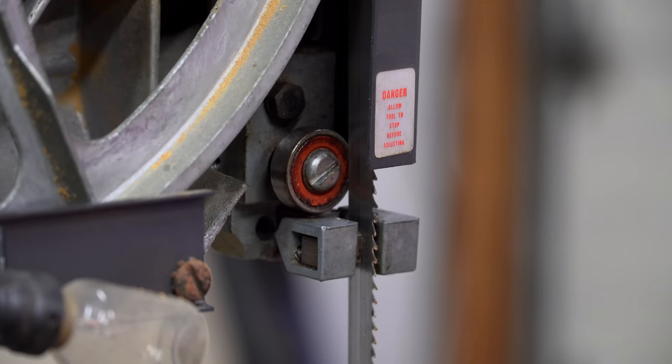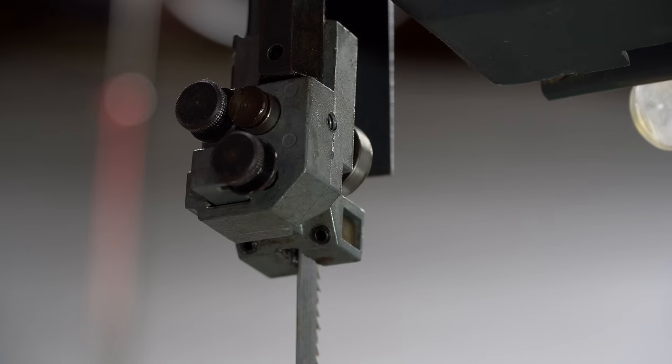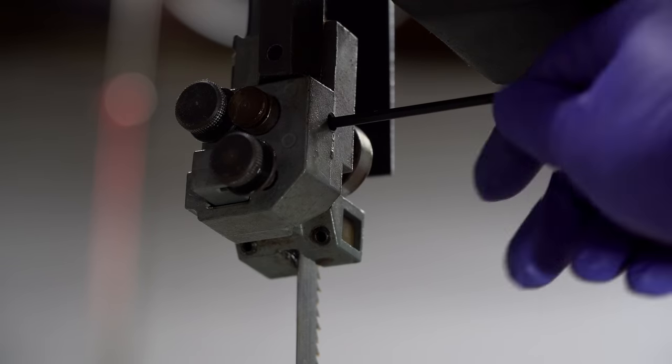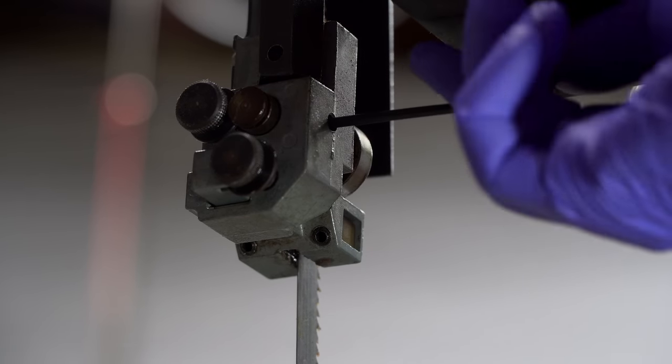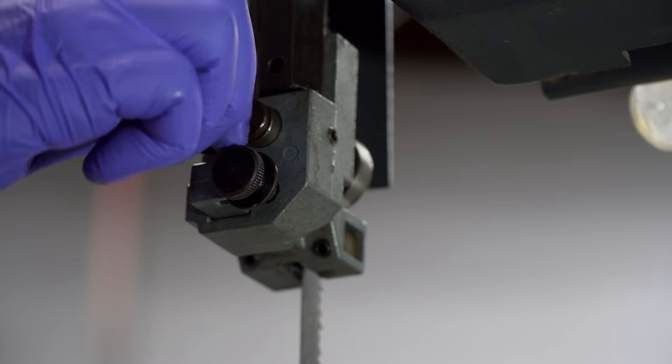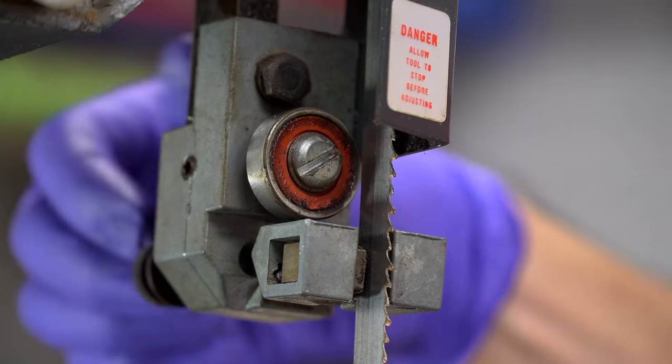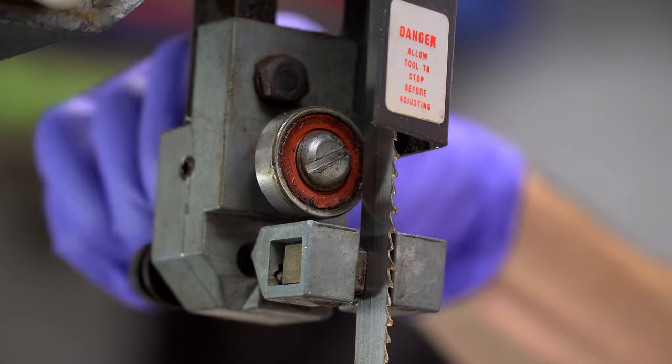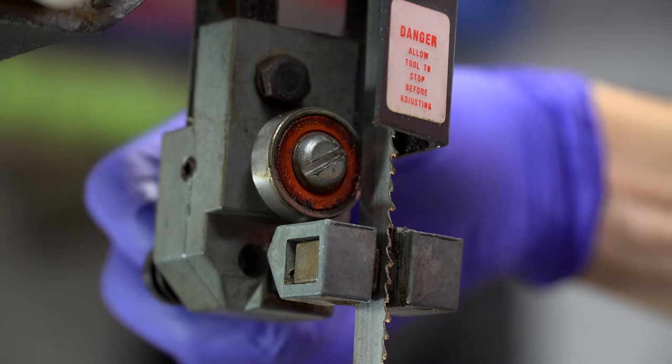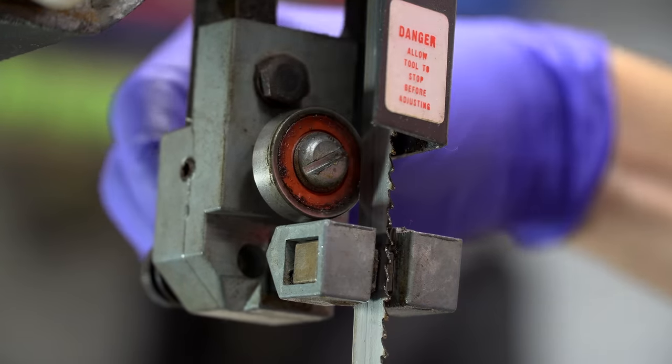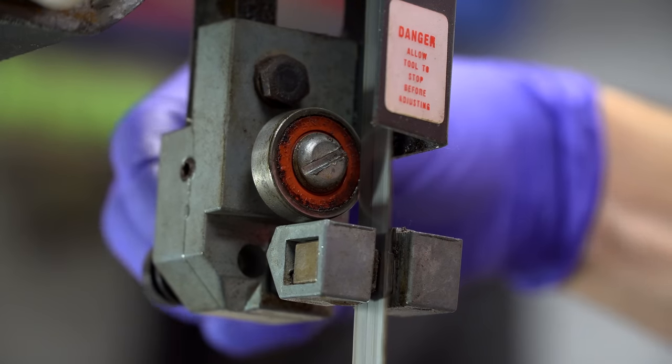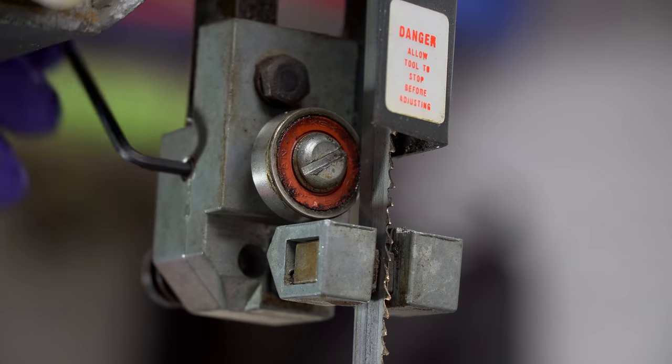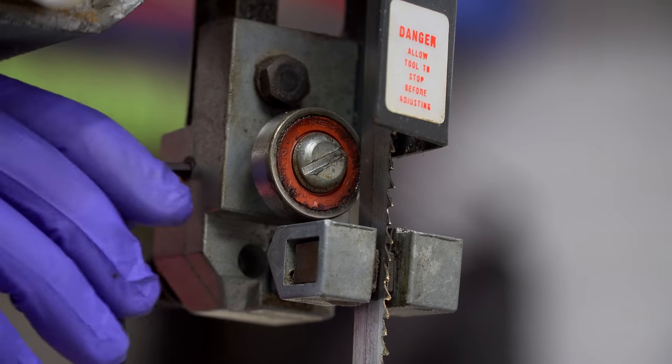Then you need to do the same thing at the top blade guide assembly, but it's a little bit different. Loosening this set screw right here will allow you to turn this top knob. When you turn this top knob, it'll either push the bearing forward or backwards. And again, you want it to be almost making contact with the blade, but not quite. Once you've got it to the point where it's close to the blade but not quite touching, go ahead and tighten the set screw.